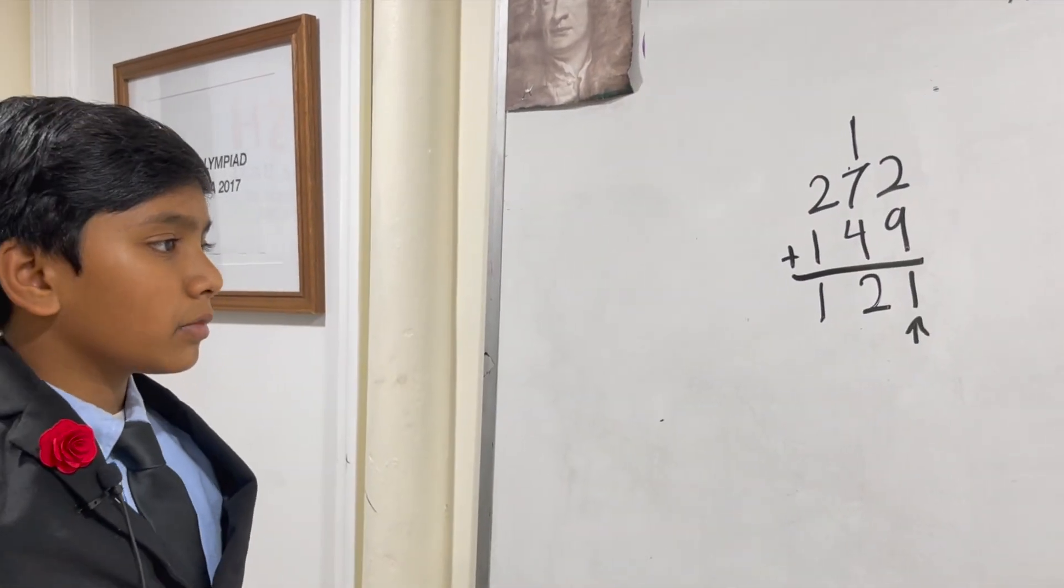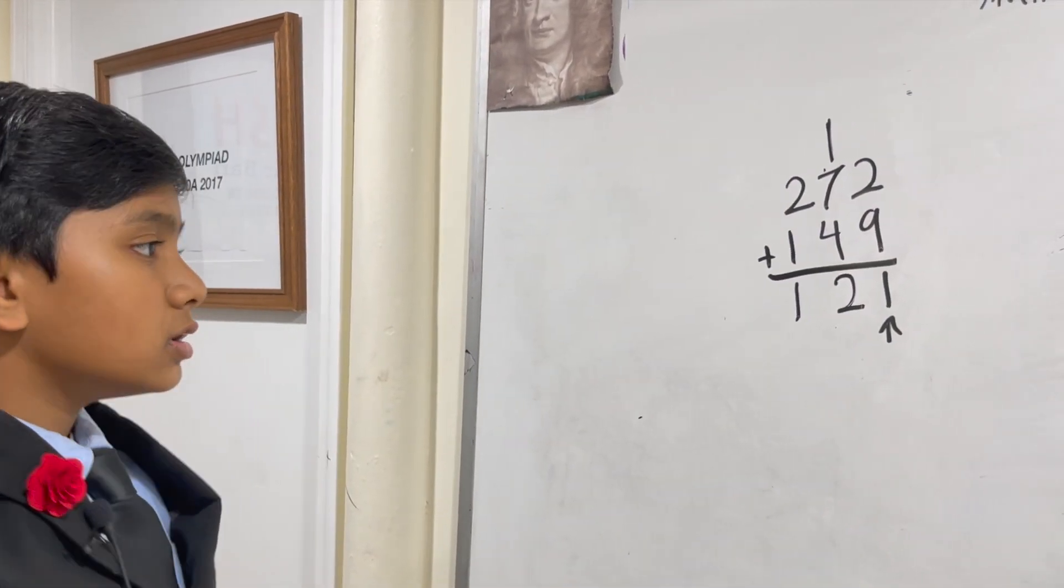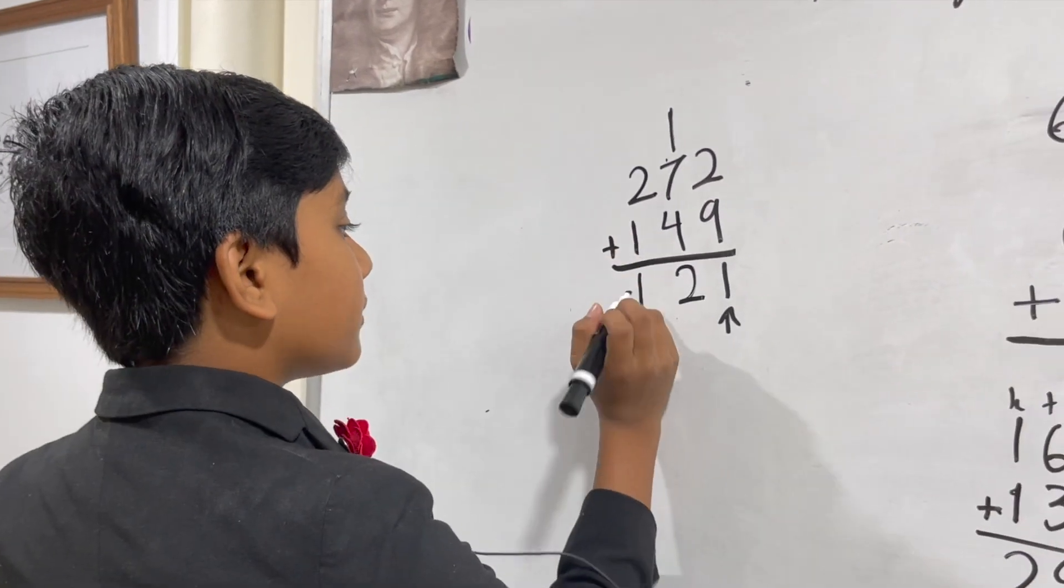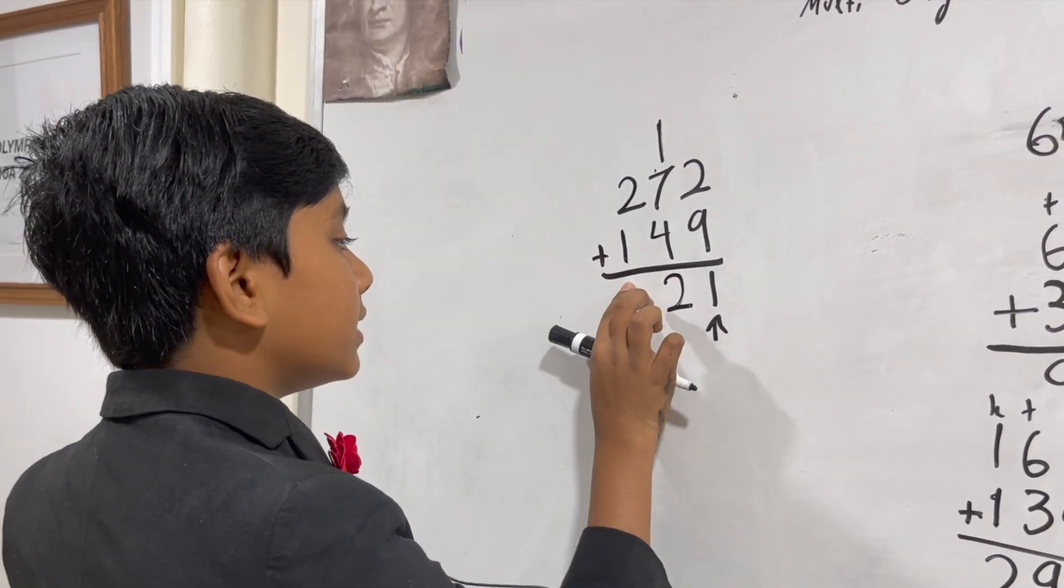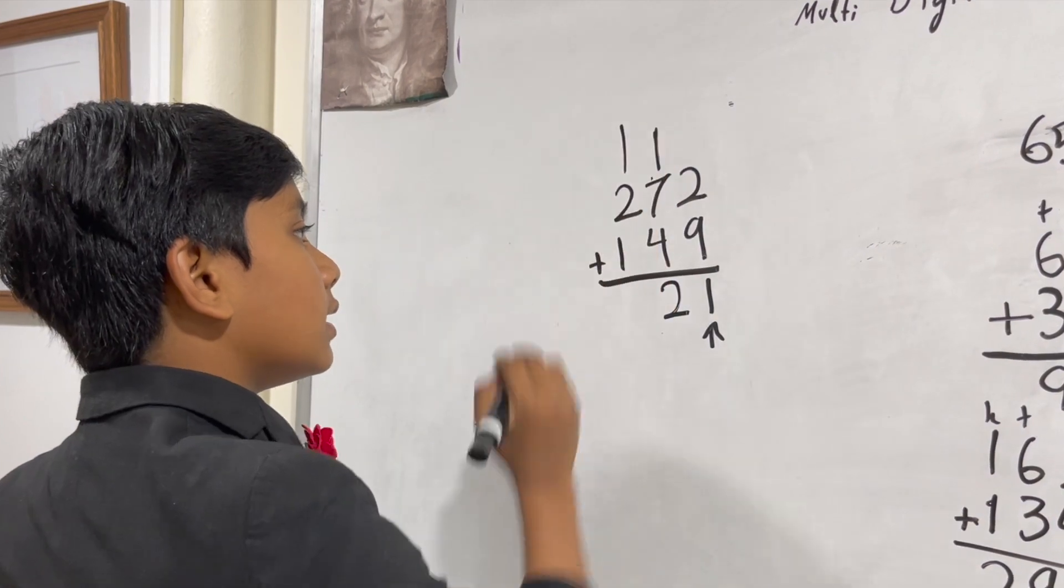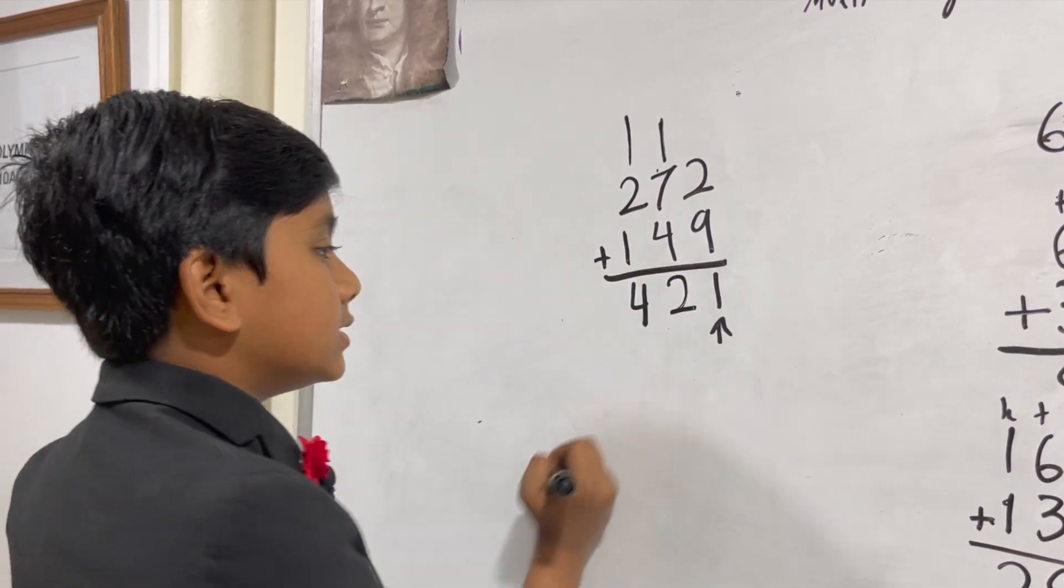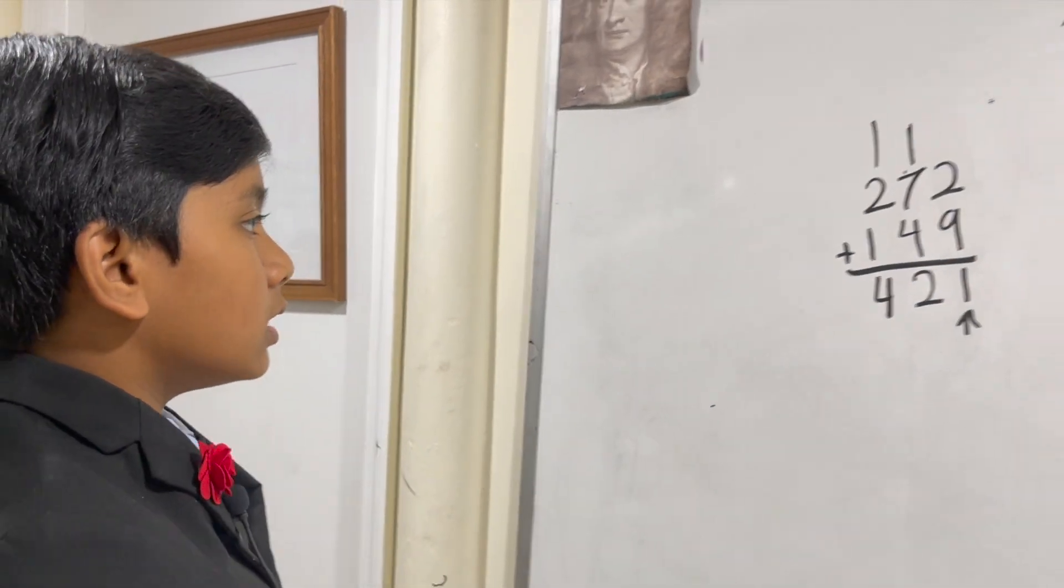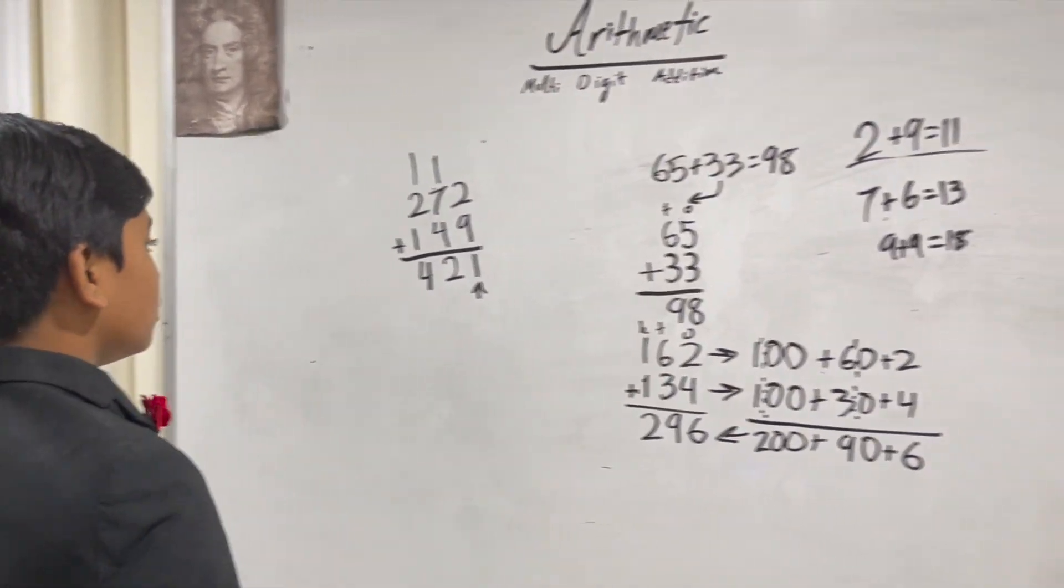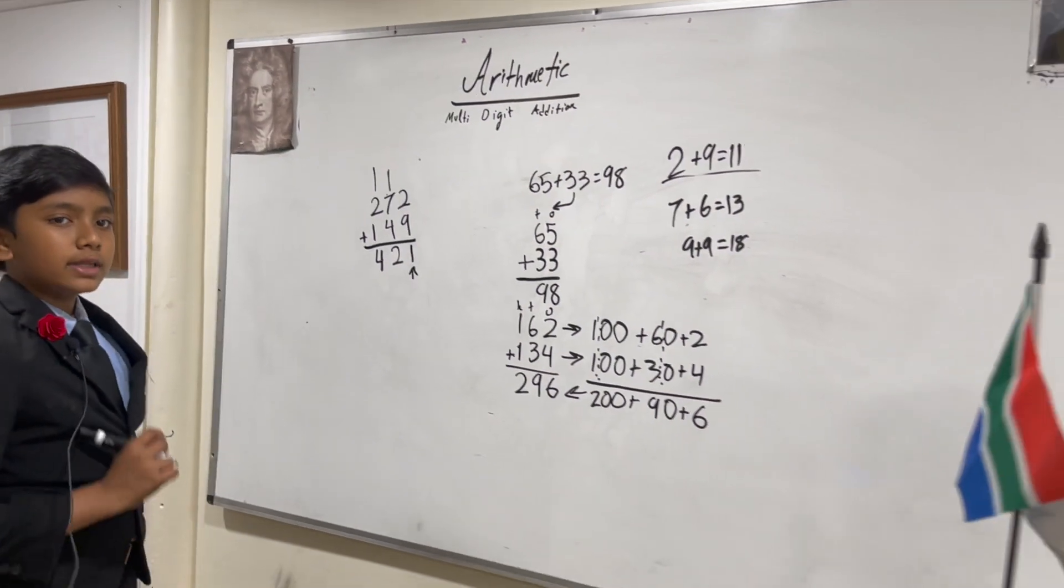One plus two plus one is four, which is not a two digit number. So the answer to 272 plus 149 is 421.